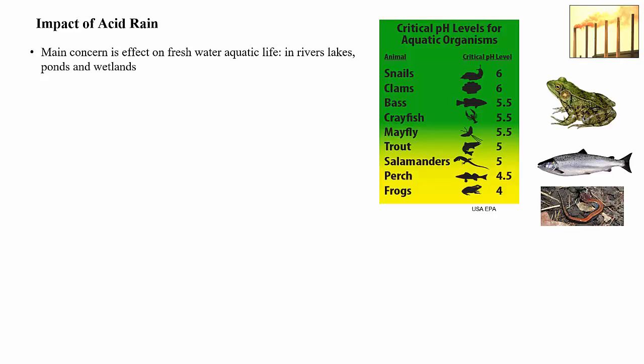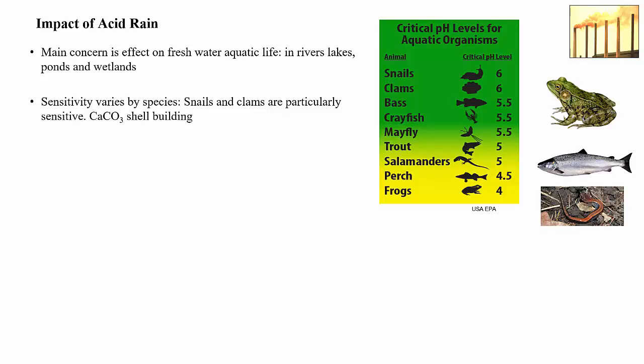The main environmental impact of acid rain is on freshwater aquatic systems — wildlife in lakes, ponds, rivers, marshes, and wetlands. This chart from the US Environmental Protection Agency shows the critical pH level below which a species won't survive. The sensitivity to acidic waters varies by species: frogs, fish, salamanders, and benthic invertebrates like snails, clams, and crayfish all have different sensitivities. Snails and clams are particularly sensitive — they need a pH of at least 6 to survive, because they build their shells out of calcium carbonate and acidic water dissolves their shells.